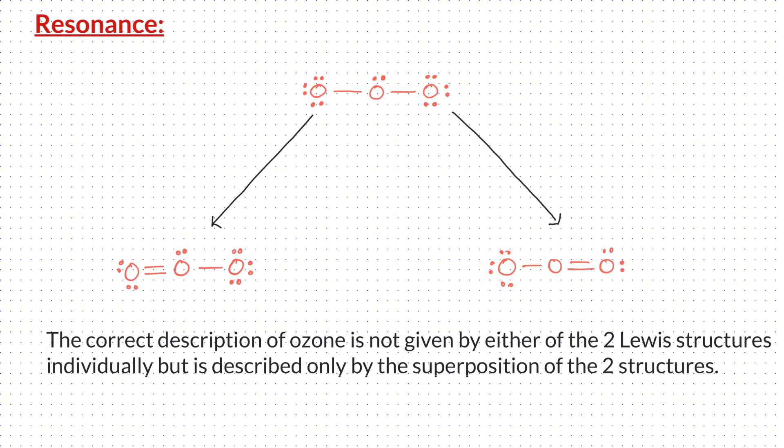According to the concept of resonance, the correct description of ozone is not given by either of the two Lewis dot structures individually, but it is described only by the superposition or average of the two structures. That is, the ozone molecule does not exist as either one of the structures, but as an average of both the structures.